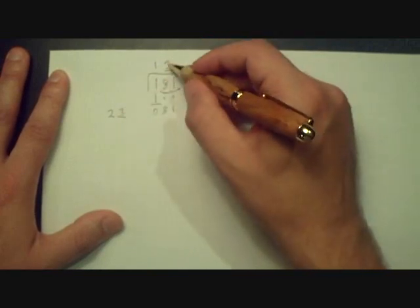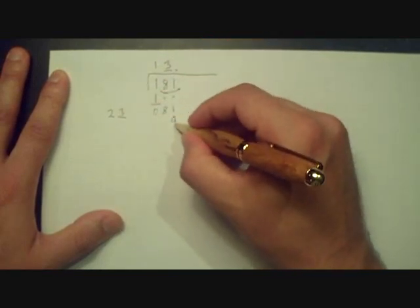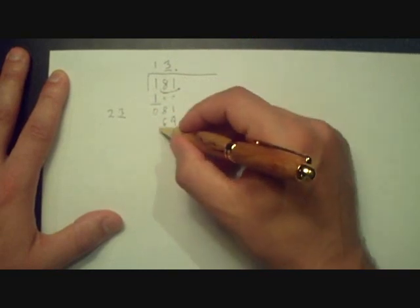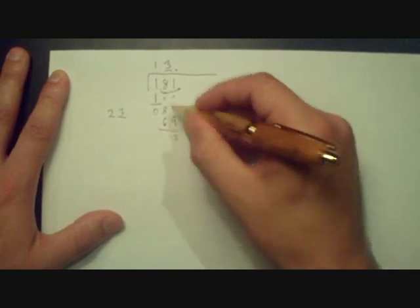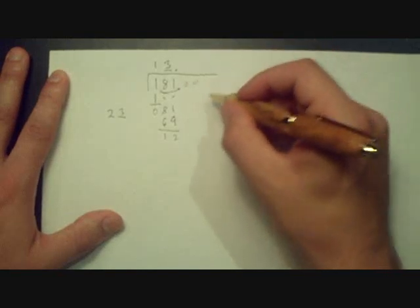Okay, so we put a 3 here, and so we say 3 times 3, 9, 3 times 2, 69, subtract 2, 1. Okay, so now we continue.